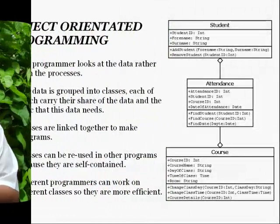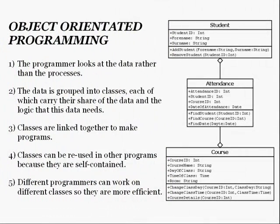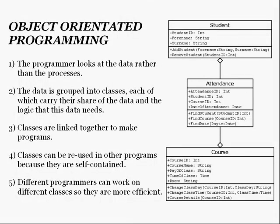Object-oriented programming stands the conventional idea of programming on its head. Instead of worrying about exactly what your program will do, you worry about the data and what it does. In effect, you invent your own variables, and you decide what those variables can and can't do. The program then becomes an exercise in stringing these new variable types together in the way that you want your program to work.